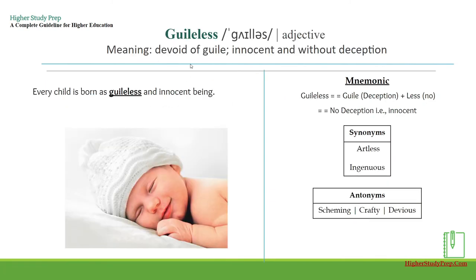Guileless — it's an adjective which means devoid of guile, innocent, and without deception. For example, every child is born as a guileless and innocent being. The mnemonic for remembering the word guileless: it can be broken up as 'guile,' which is deception, and 'less,' which means no. So guileless means no deception, or something that is innocent. Some synonyms can be artless, ingenuous. Antonyms could be scheming, crafty, devious.